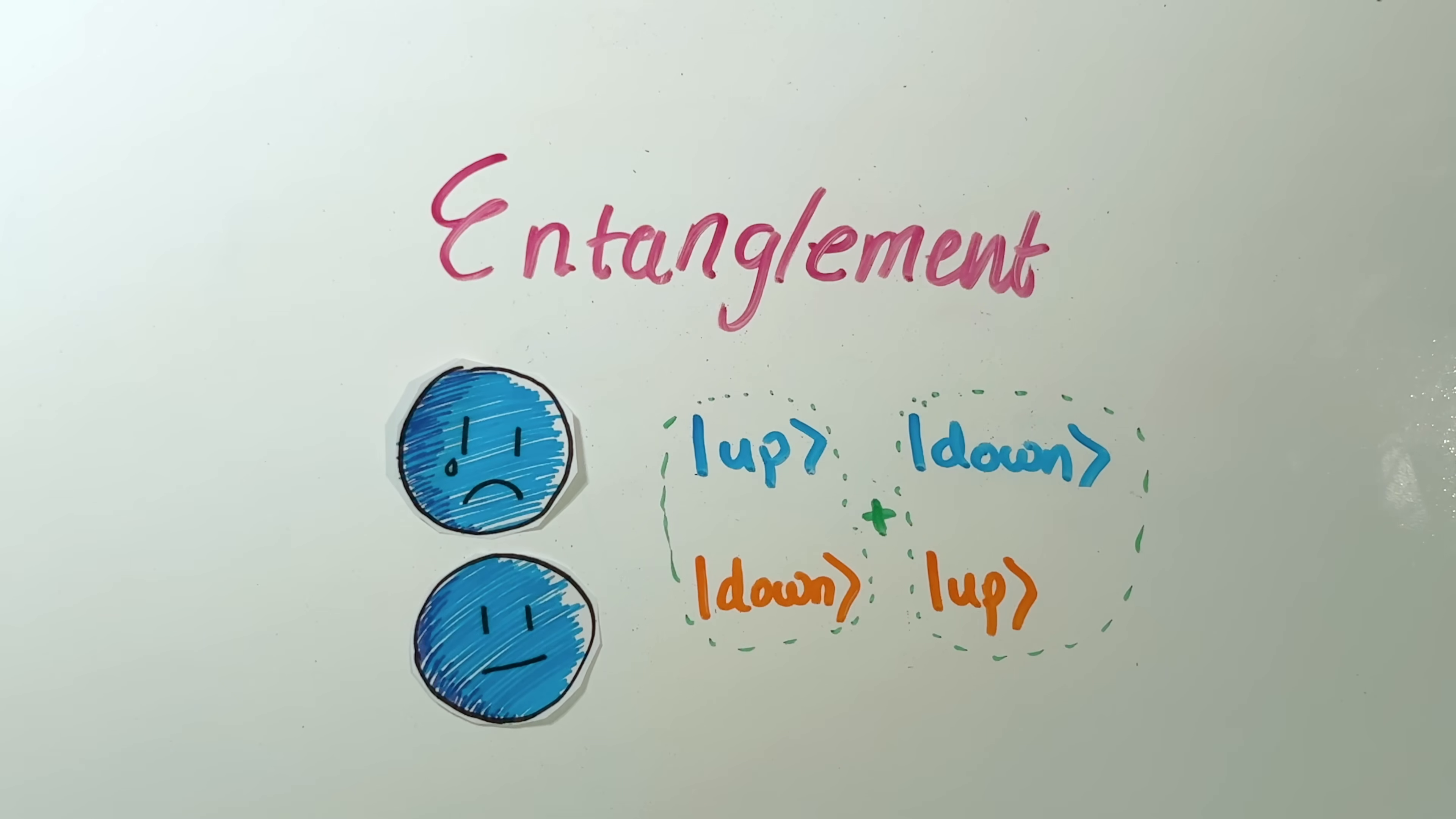This is now entanglement because if I were to ask you, what's the state of this electron? You would have to reference the other electron to give me the right answer. You would have to say, well, it's doing two things at the same time. It's down when the other one is up and it's up when the other one is down. And it's doing both of those in superposition.